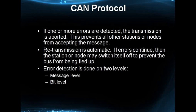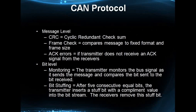At the broader level, there are two levels where errors are detected: one is at the message level, and another at the bit level. At the message level, one type is CRC error. The 15-bit CRC sequence is calculated from the start of the frame through the data bytes and is sent by the transmitter. The receiving node uses the same polynomial to check the CRC — if it doesn't match, it generates an error frame, termed a CRC error.